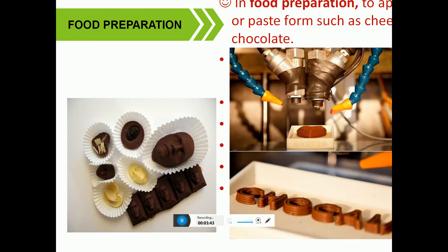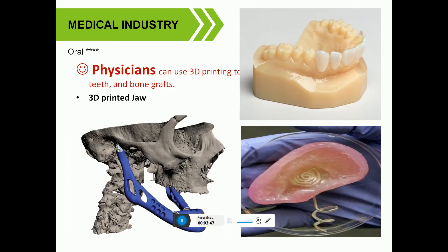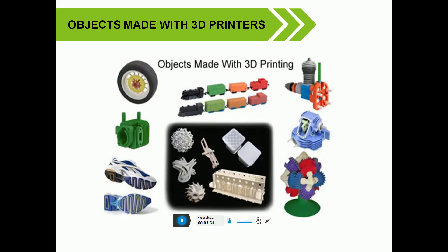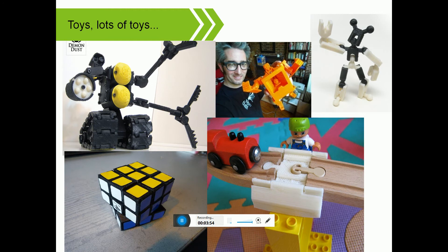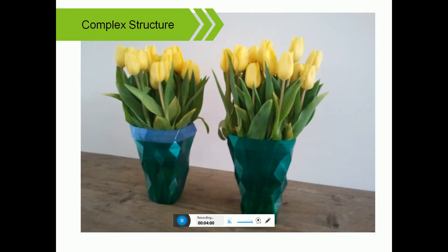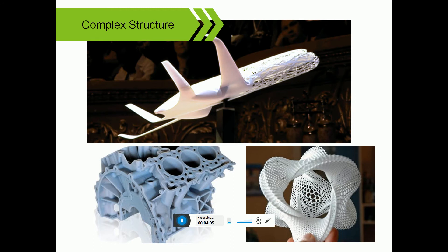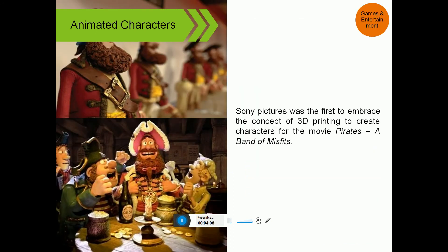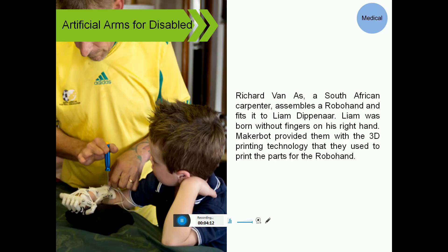3D printing applications include food — for example, chocolate is printed by chocolate companies. There are physical and medical applications such as engineering aids and 3D printing technology for toys. 3D printers can make replacement parts for devices, produce complex structures, create animated characters, and manufacture prosthetic arms for people with disabilities.